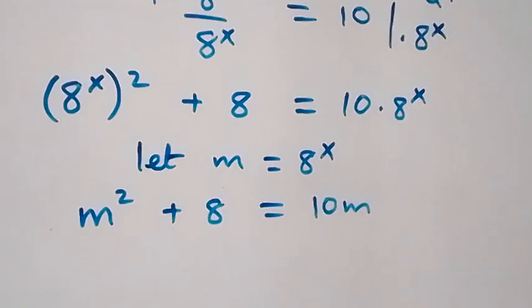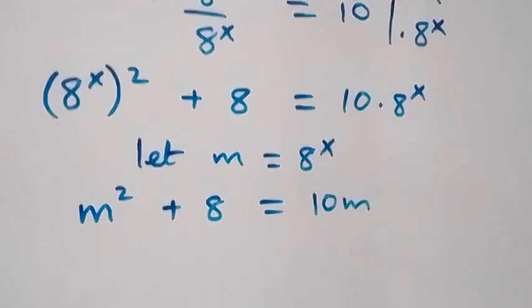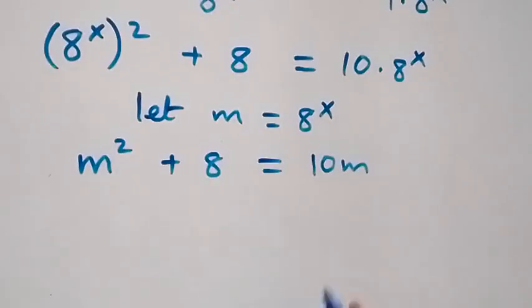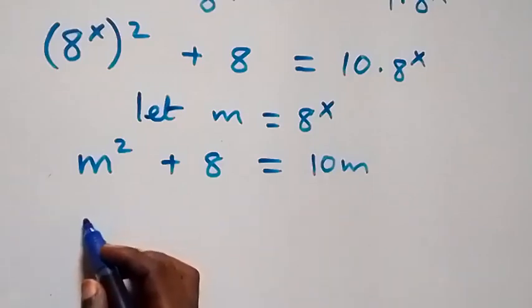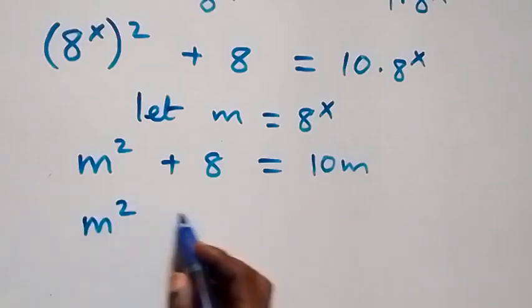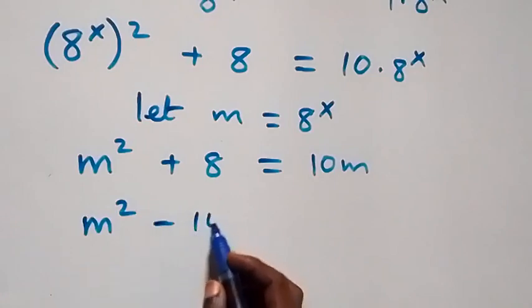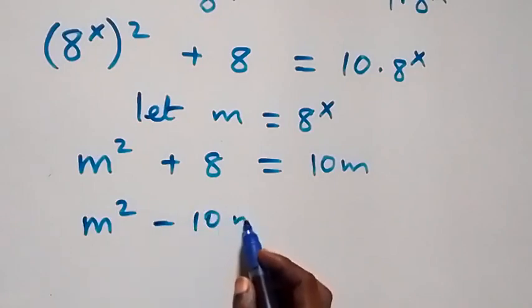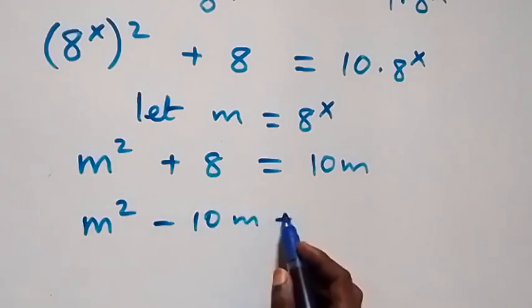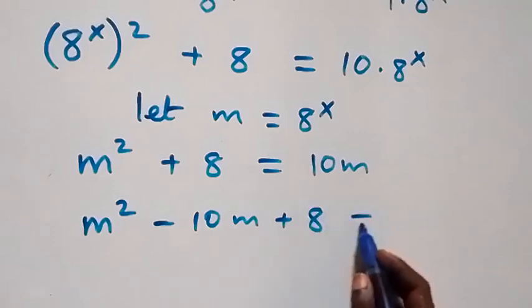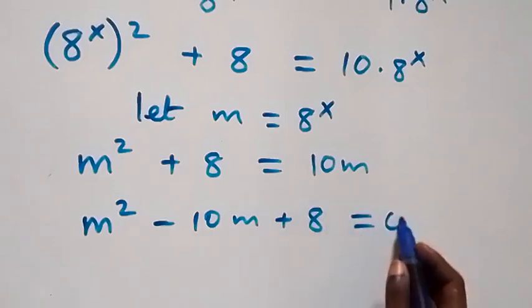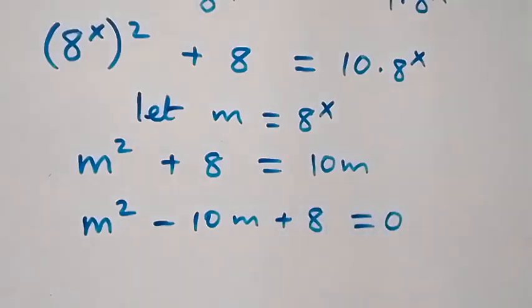Then this equation becomes m squared plus 8 equals to 10m. We bring everything to one side and rearrange, then we have m squared minus 10m plus 8 equals to 0.